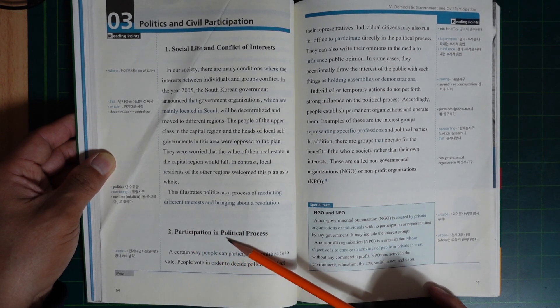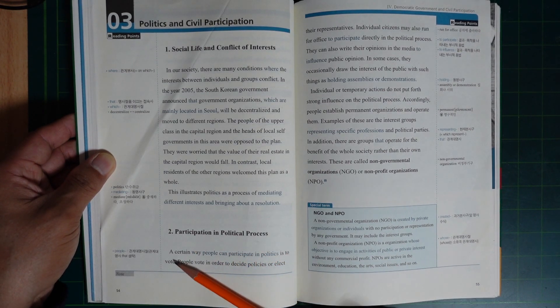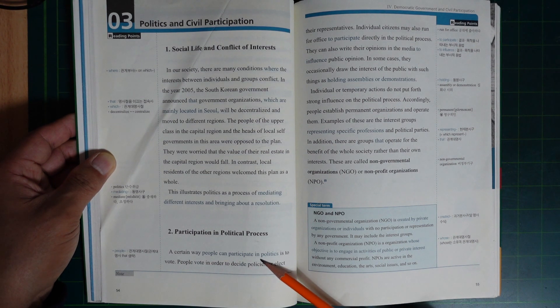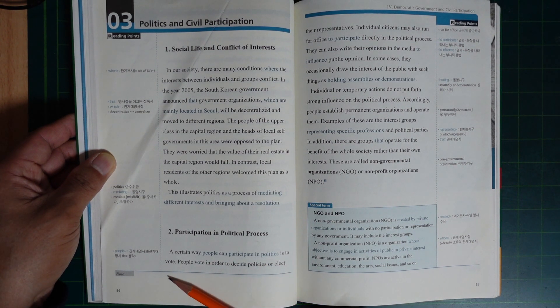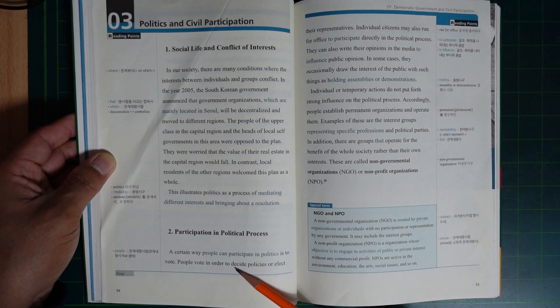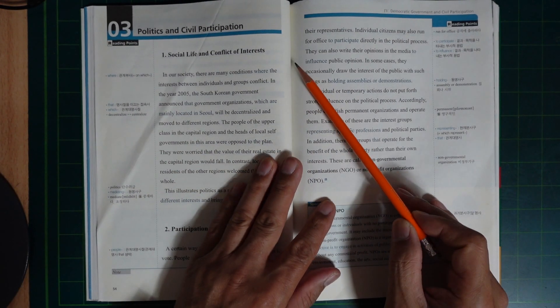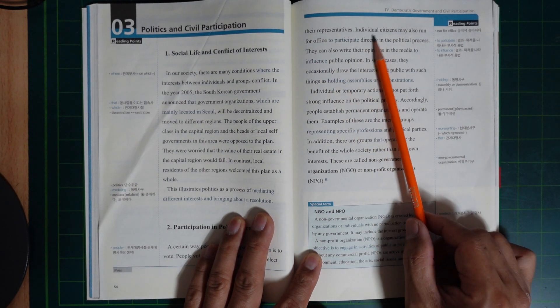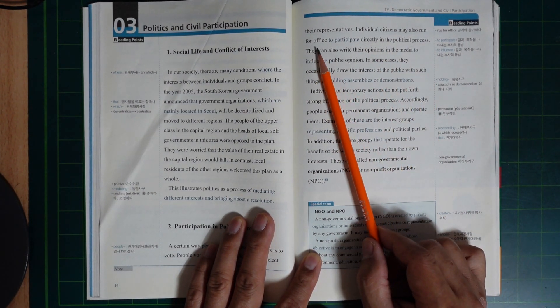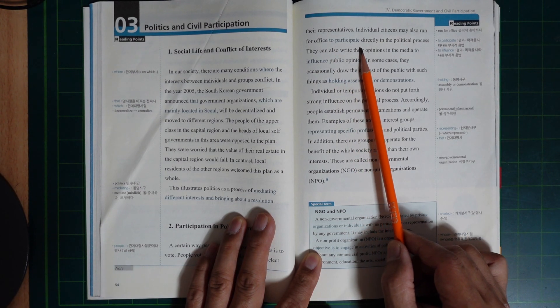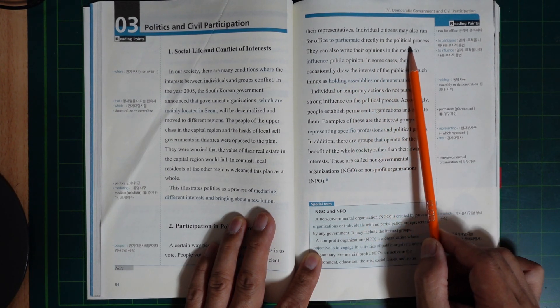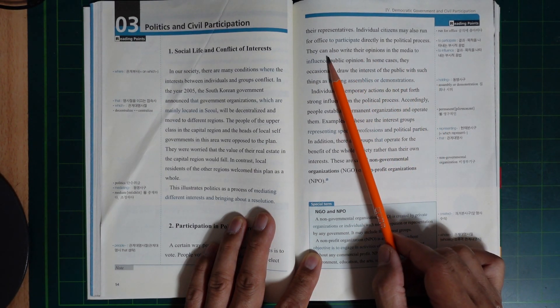Participation in a political process. A certain way people can participate in politics is to vote. People vote in order to decide policies or elect their representatives.